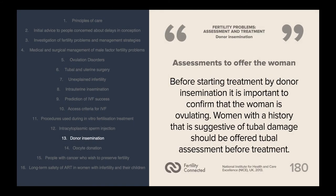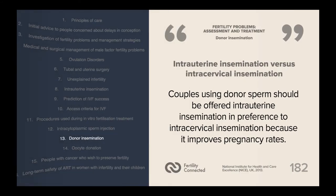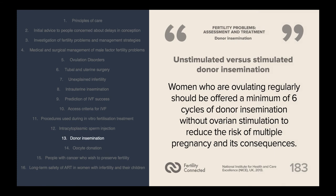Before starting treatment by donor insemination, it is important to confirm that the woman is ovulating. Women with a history suggestive of tubal damage should be offered tubal assessment before treatment. Women with no risk factors should be offered tubal assessment after three cycles if treatment by donor insemination has been unsuccessful. Couples using donor sperm should be offered intrauterine insemination in preference to intracervical insemination, as it improves pregnancy rates. Women who are ovulating regularly should be offered a minimum of six cycles of donor insemination without ovarian stimulation to reduce the risk of multiple pregnancy and its consequences.